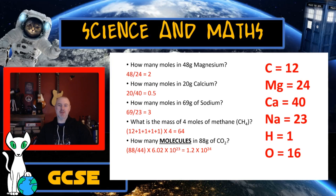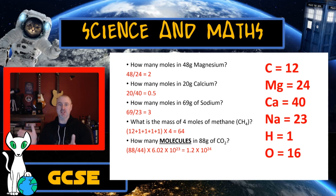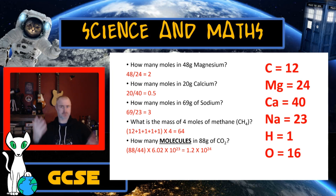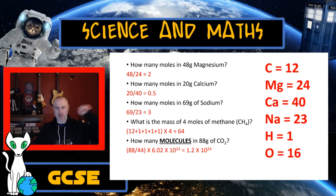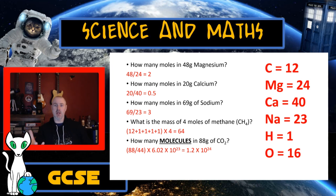Question 1: How many moles are there in 48 grams of magnesium? Magnesium has a mass number of 24, so 24 grams is one mole. Therefore 48 grams is two moles. The equation to use: number of moles = mass you have ÷ mass number of the element. Write that down if you like equations.